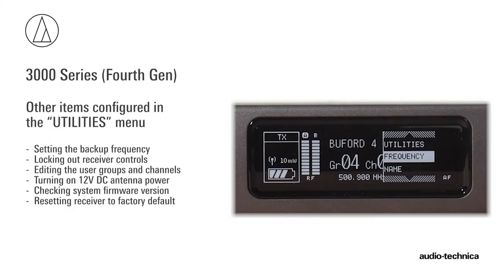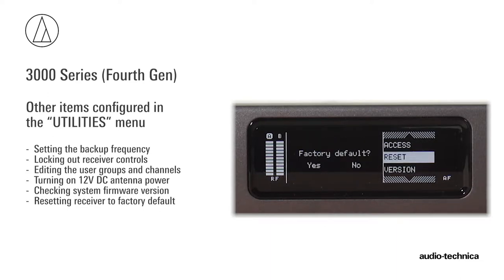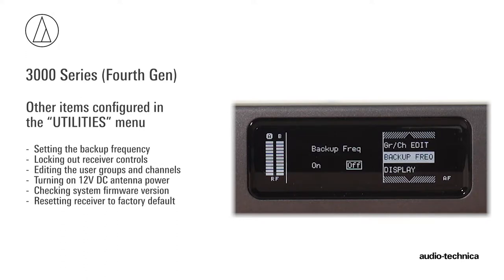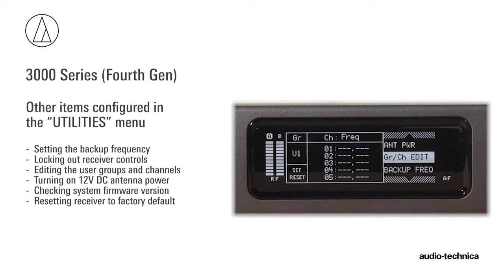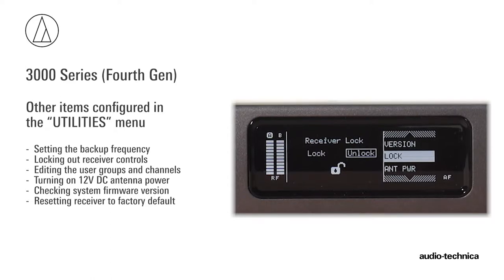Other functions that can be configured in Utilities are setting the backup frequency, locking out receiver controls, editing the user groups and channels, turning on the 12-volt DC antenna accessory power, checking the system firmware versions, and resetting the receiver to factory default settings.